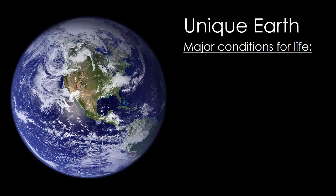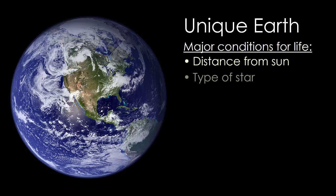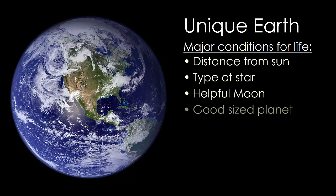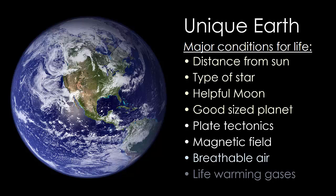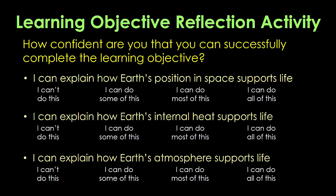So to recap, there are at least eight characteristics that contribute to the development of complex life on Earth. Four of these are related to Earth's position in space and its relationship with the Sun and the Moon. Two are related to the hot interior of the planet, and another couple are tied to the composition of Earth's atmosphere. Here are the learning objectives for today — how confident are you that you can successfully respond to each objective?